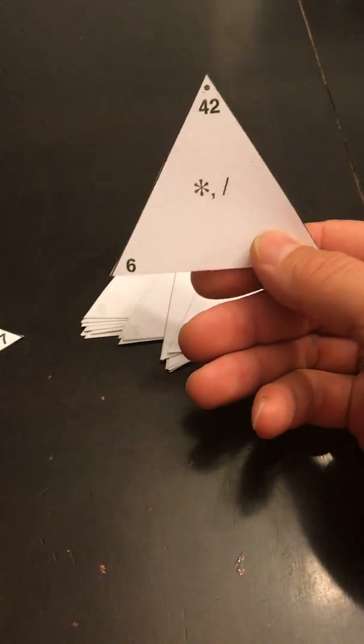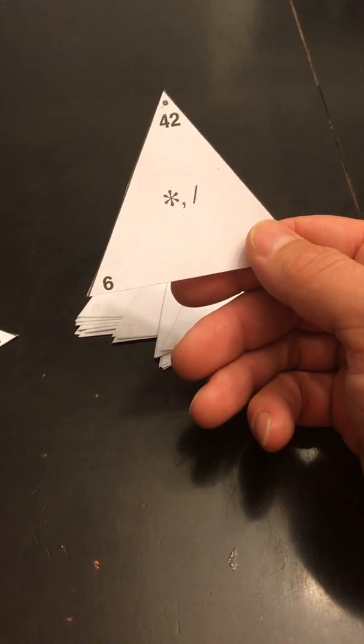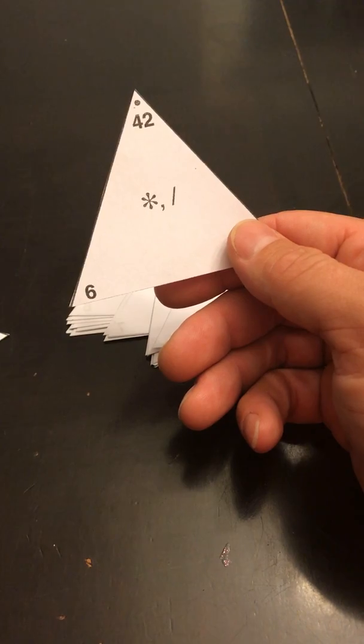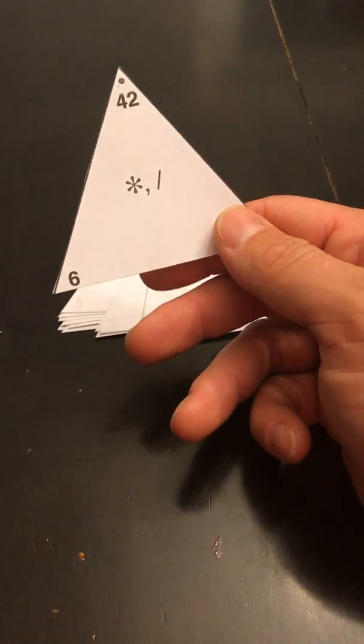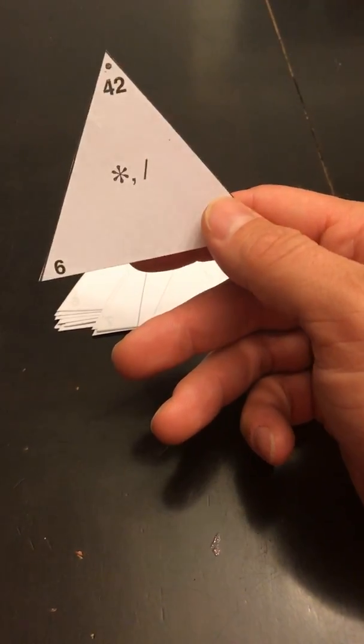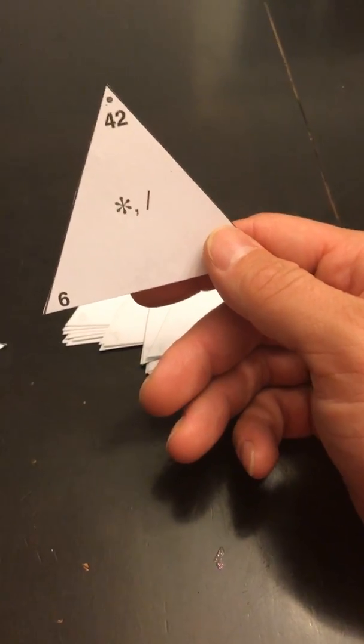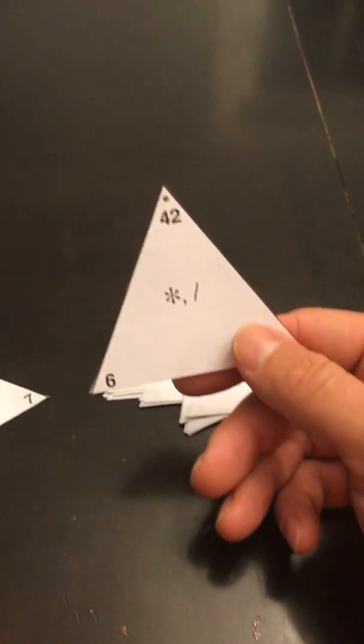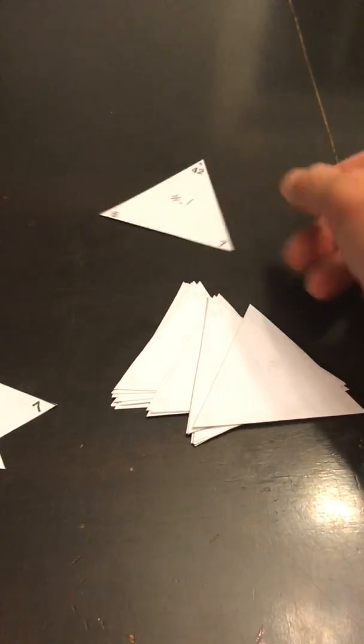Now we've got 42 divided by 6. I could go 6, 12, 18, 24, 30, 36, 42—oh, it must be 7. Well, I don't really know this one yet, so I'm gonna put this into a different pile.